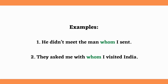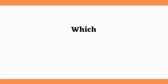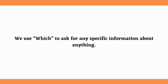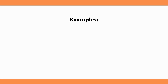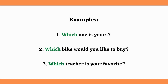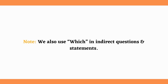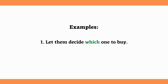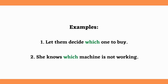Our next WH word is 'Which.' We use 'which' to ask for any specific information about anything. For example: Which one is yours? Which bike would you like to buy? Which teacher is your favorite? We also use 'which' in indirect questions and statements. For example: Let them decide which one to buy. She knows which machine is not working.